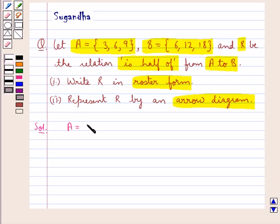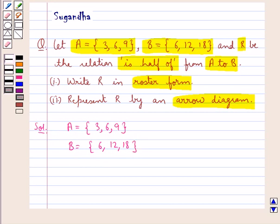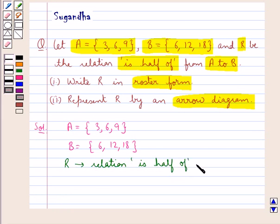We have a set A with elements 3, 6, 9, and a set B with elements 6, 12, 18. And we have R as the relation 'is half of' from A to B.